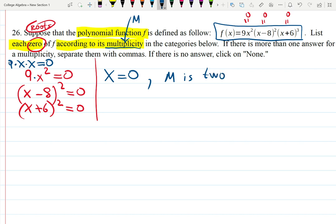(x-8)² is 0, so x equals 8 will give me 0 two times, so multiplicity is 2. Finally, what makes (x+6)² zero? Well, x+6 is 0, so x equals -6.